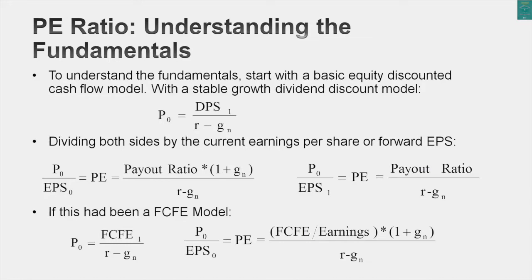Some people are concerned when they see a dividend discount model because most companies don't pay out what they can afford to in dividends. If you feel uncomfortable about using dividends, here's an alternative: use the potential dividend. Free cash flow to equity is a measure of what a company can afford to pay out, not what it actually does pay out. Just replace the actual payout ratio with a potential payout ratio, and you've got the determinants of the P/E ratio for a company.